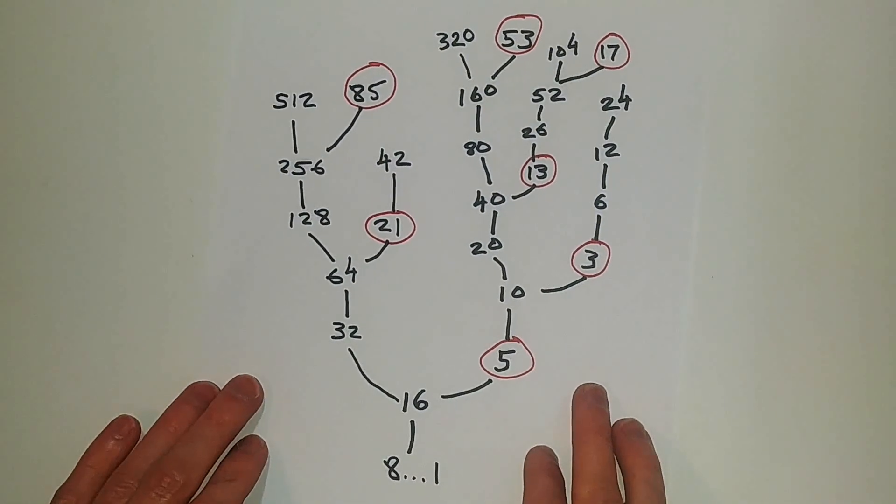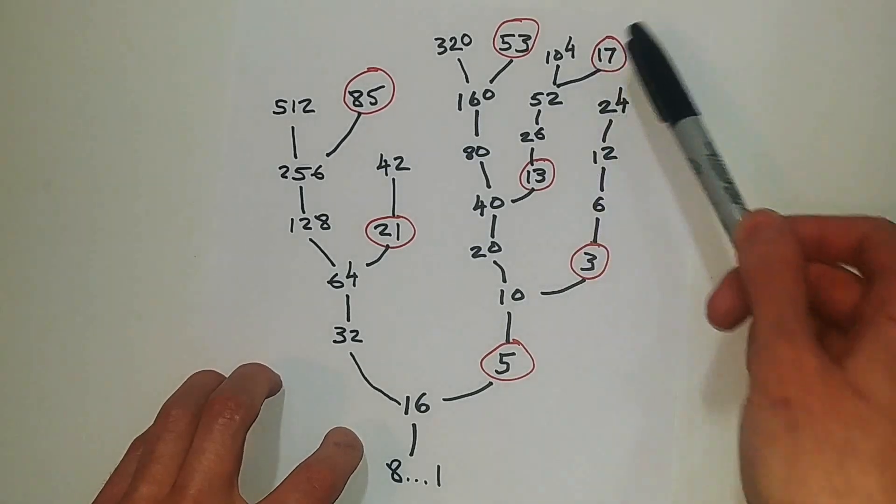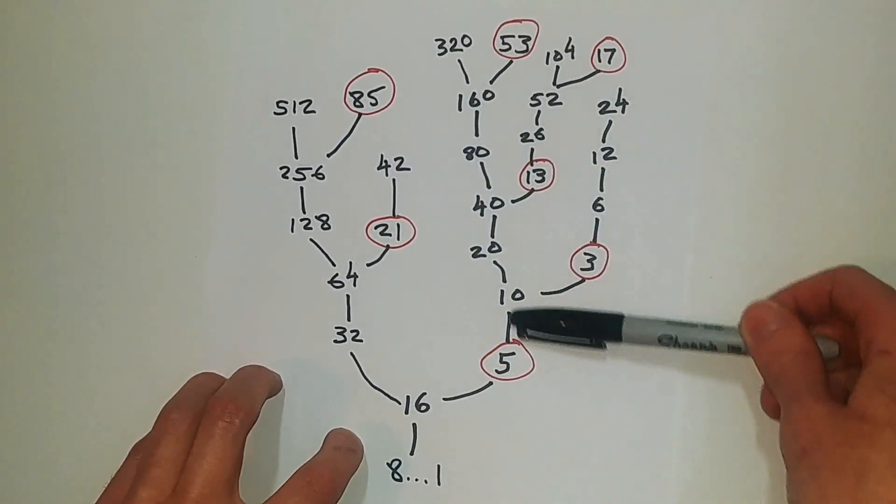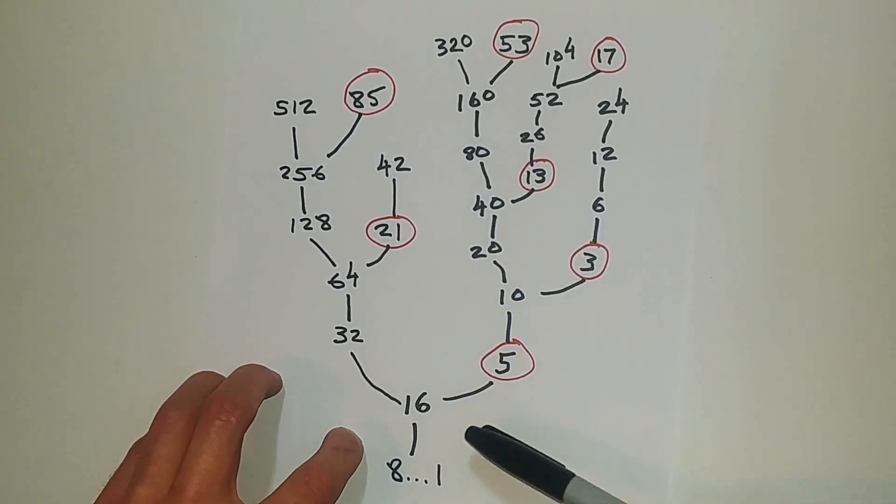So one thing we can do is make a tree such as this, and we can see a couple of things about this tree. This tree would be you start at a number and then you iterate downward, and it shows all numbers leading to 1.